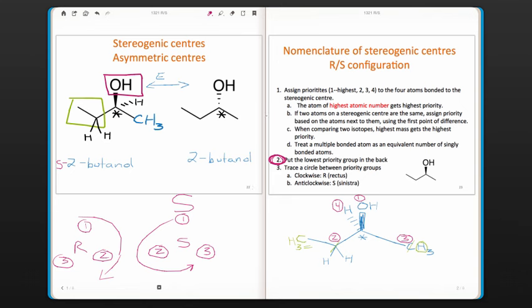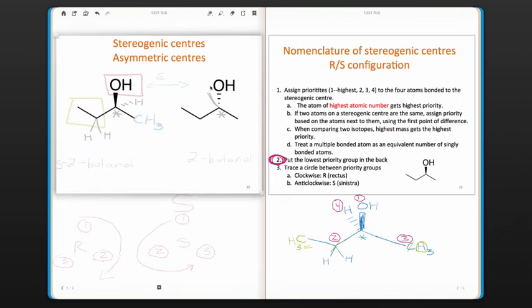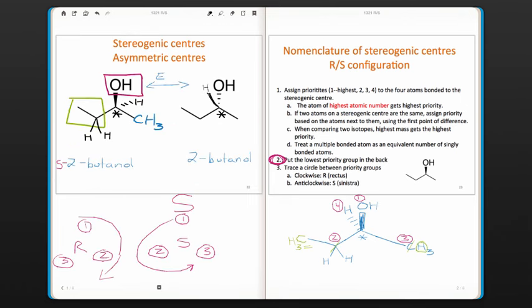If we assign the priorities for the other enantiomer, notice the priorities get assigned exactly the same way. But this time when we go to number two and we put the lowest priority group on the back, what we end up with is the one, the three on the left, and the two on the right. So this is the R configuration. So the molecule on the right is R-2-butanol.